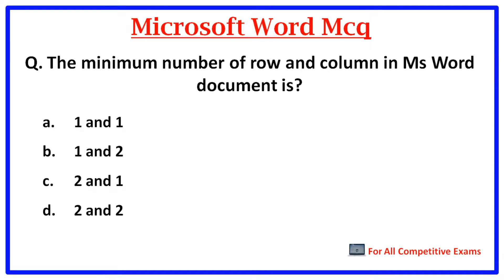Next question. The minimum number of rows and columns in an MS Word document is — the right answer is option A: one row and one column.